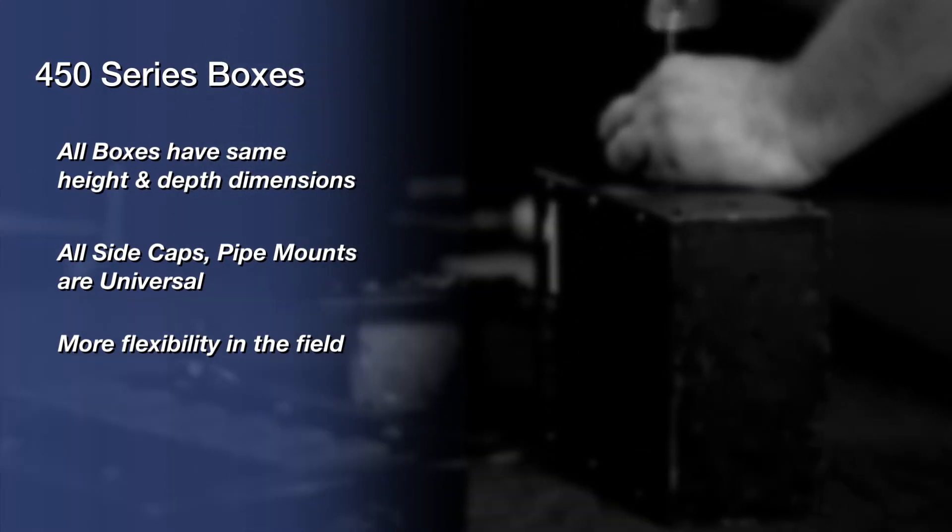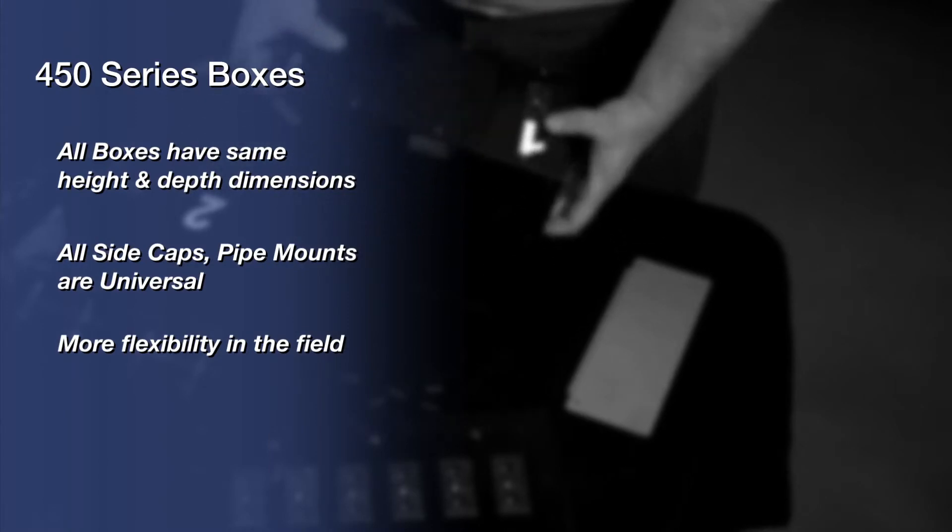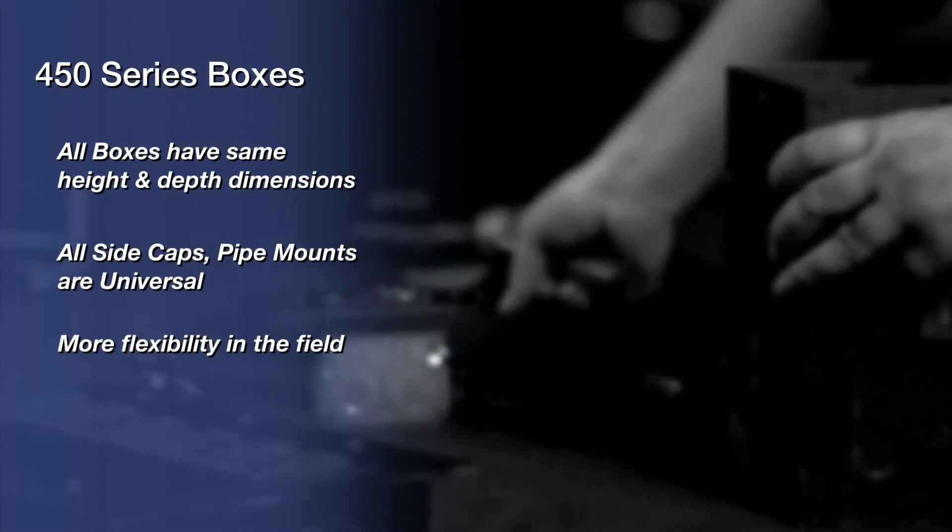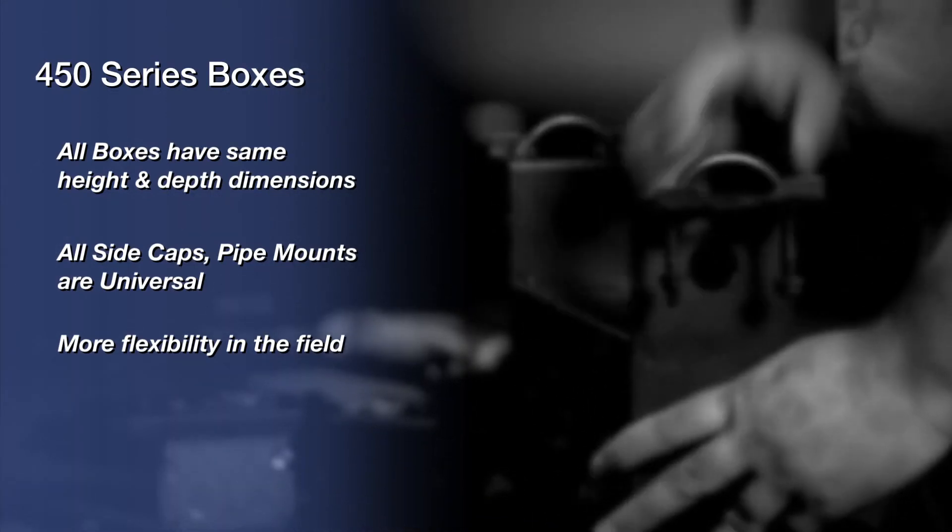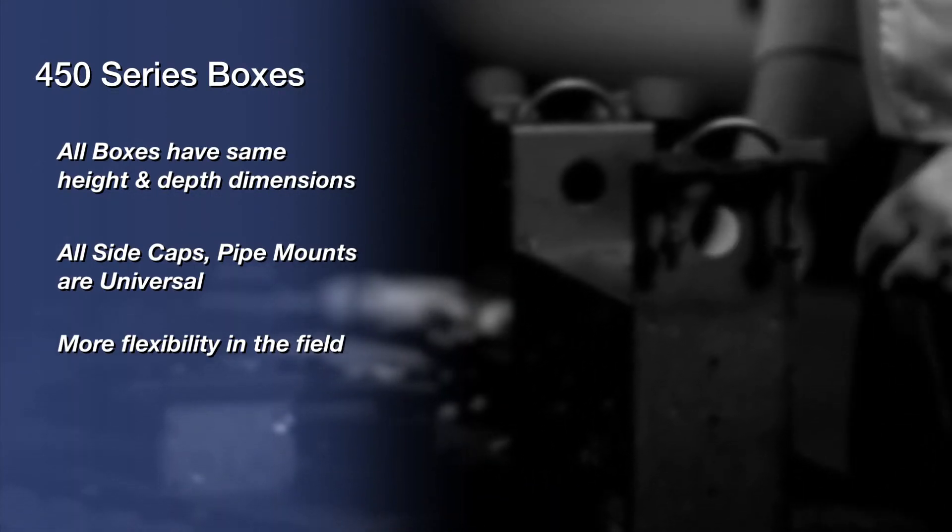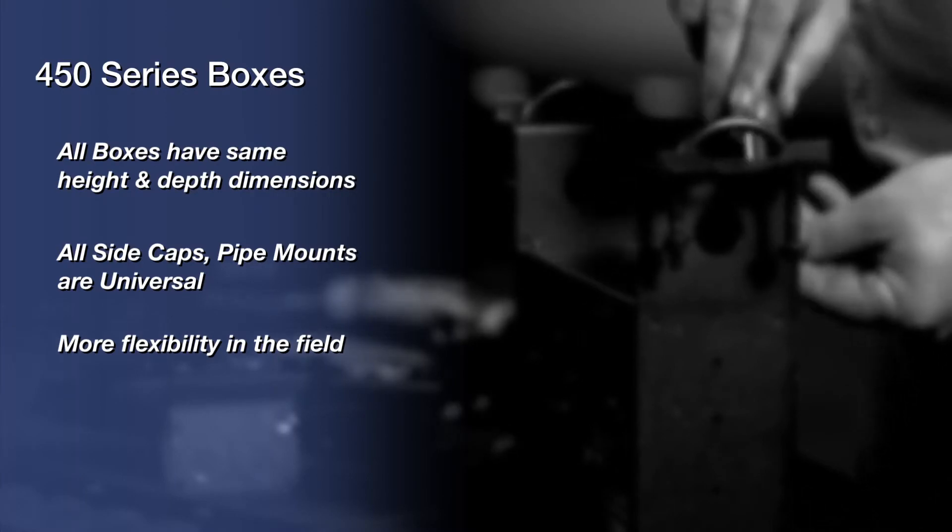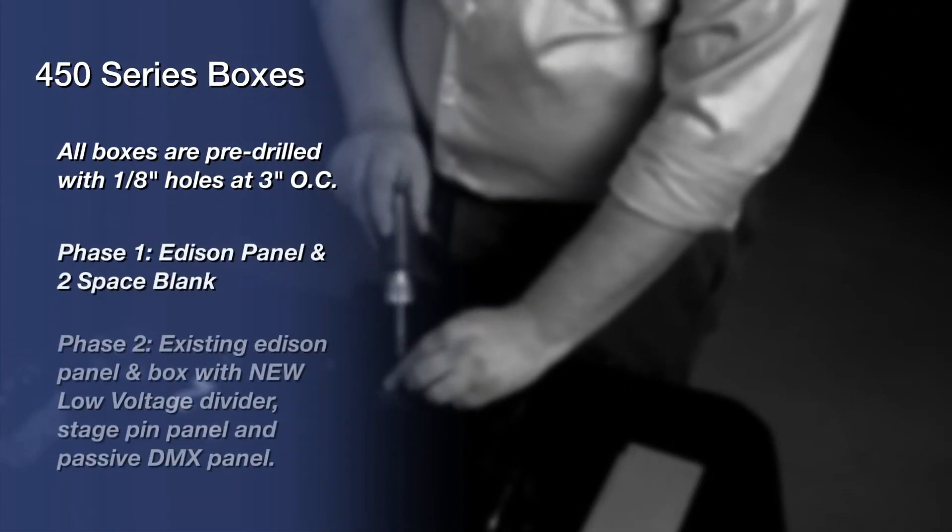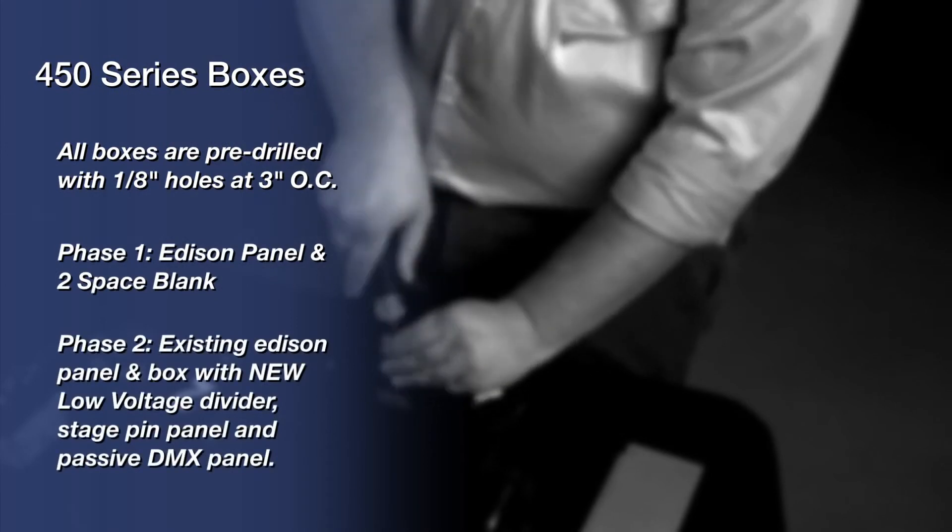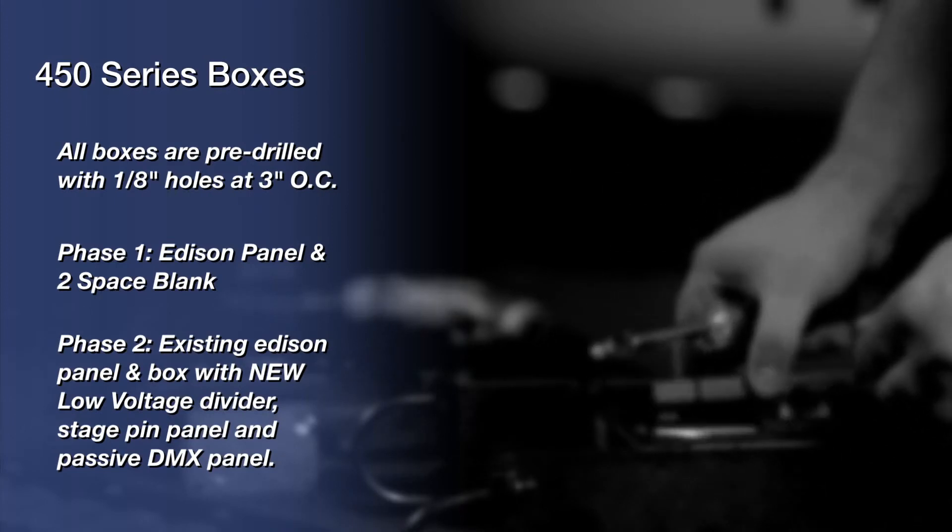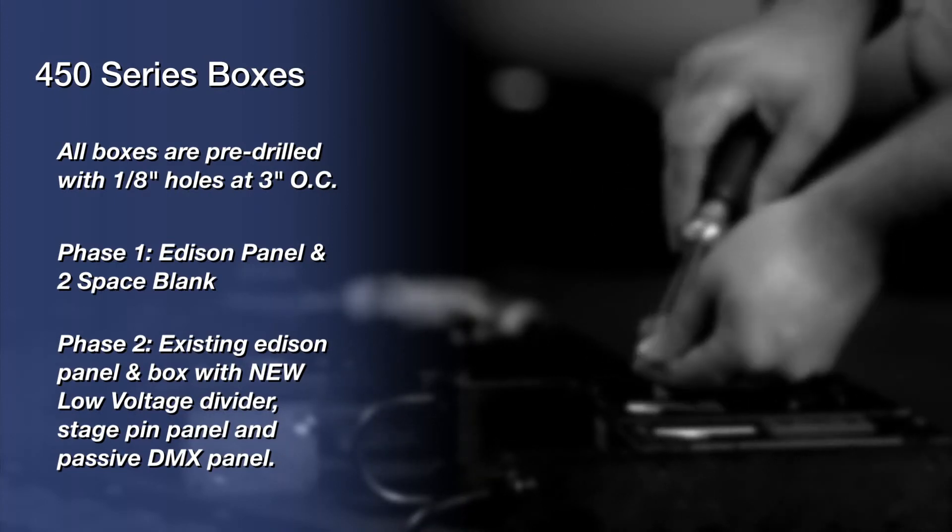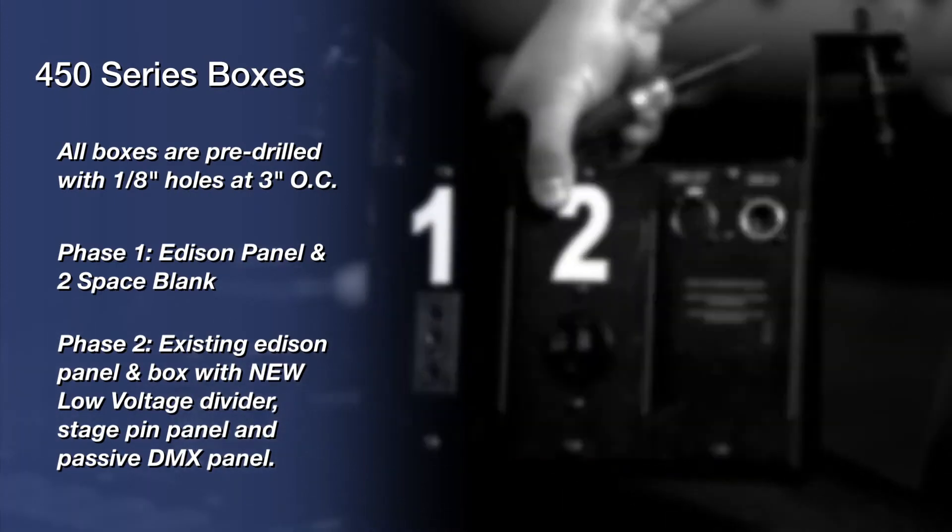What is great about this standard size is that it allows for more flexibility for the designer, contractor, and owner. A standard surface mount plug box can be modified to a pipe mounted box by simply removing the four screws at each end and attaching the pipe mount accessory panel. A box can carry a single Edison connector and a two panel blank for phase one. And for phase two, the contractor can remove the blank and add a low voltage barrier, one passive DMX connector, and a dimmable stage pin connector.